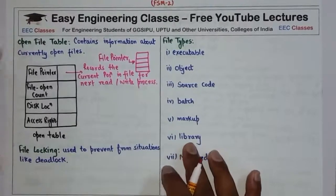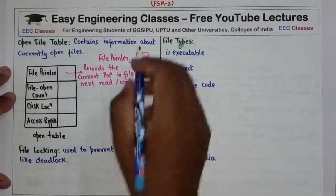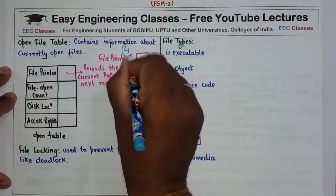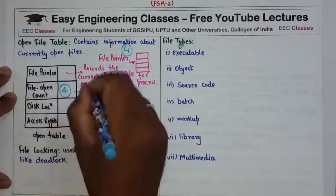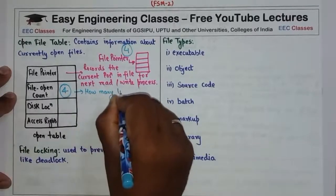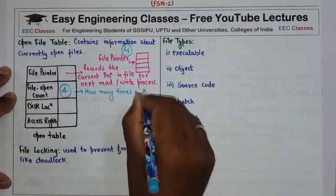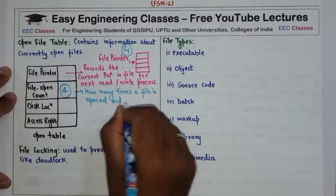The file open count specifies how many times the current file has been opened simultaneously by different processes and not yet closed. For example, if a file is opened by four users and not yet closed, this will contain a value of 4.